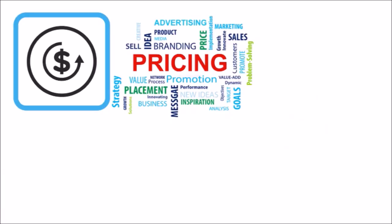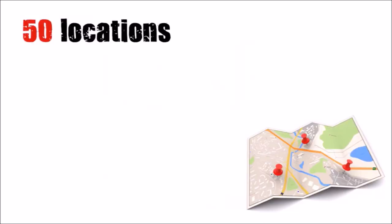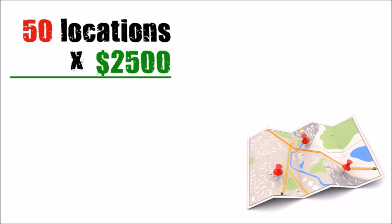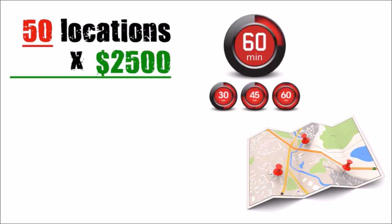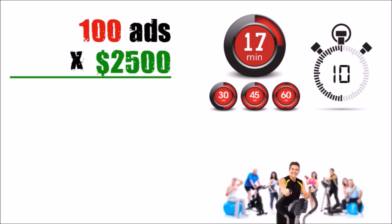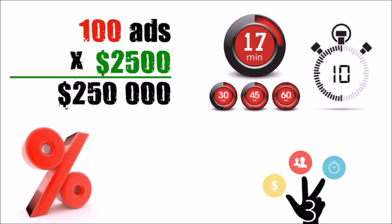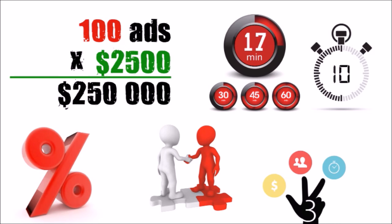How much you charge advertisers will vary based on factors covered in other parts of our videos. For example, if a gym has 50 locations and you charge $2,500 per ad, the ad will be placed in all 50 locations and play each and every hour the gym is open. If you place 10 ten-second ads, your loop time will be 17 minutes, meaning a client's ad plays every 17 minutes — so a person training for an hour will see each ad three times. That's a $250,000 yearly revenue.